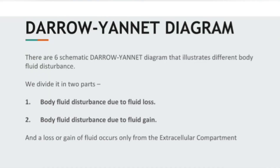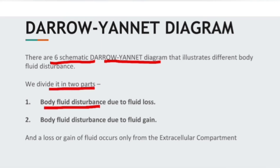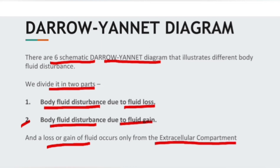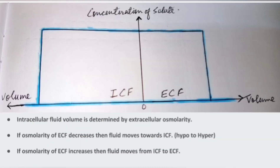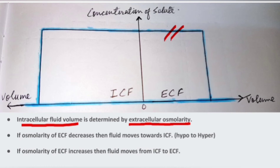Before going into the main topic, let's discuss the basics first. There are 6 schematic Darrow-Yanada diagrams divided into 2 parts. The first part covers body fluid disturbances due to fluid loss, and the second part covers disturbances due to fluid gain. Loss and gain of fluid occurs only from the extracellular compartment. The intracellular fluid volume is determined by the extracellular osmolarity.